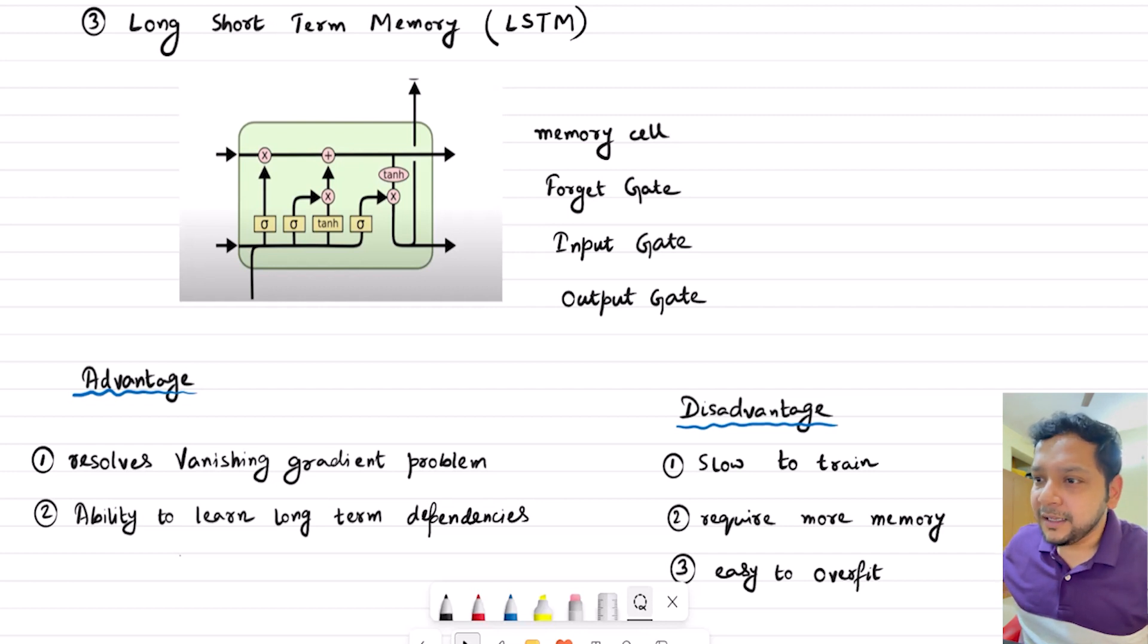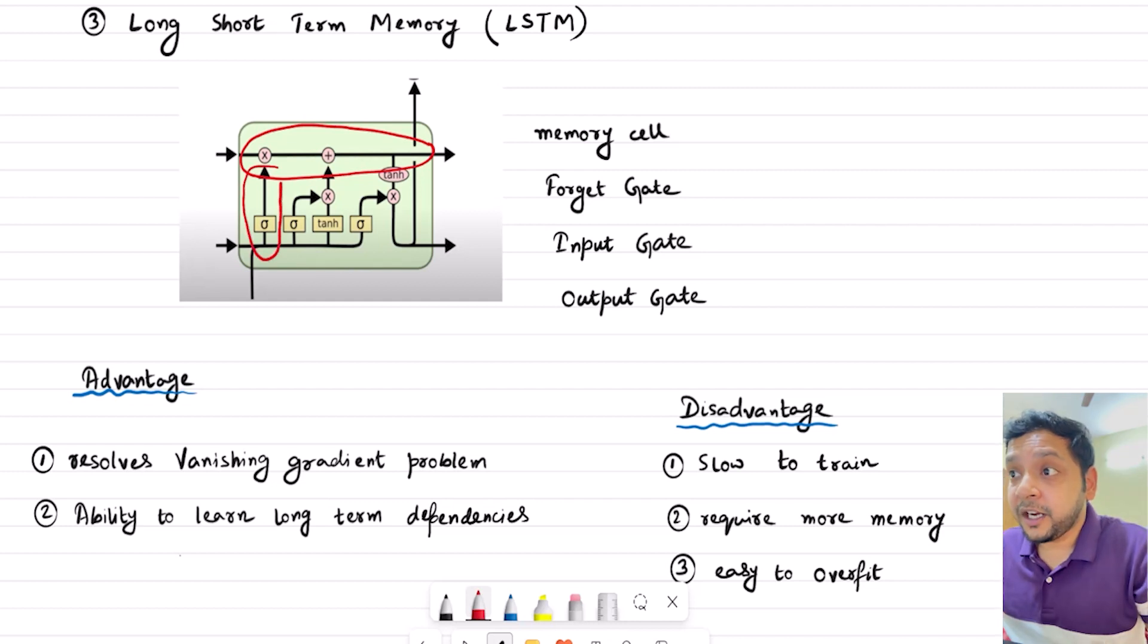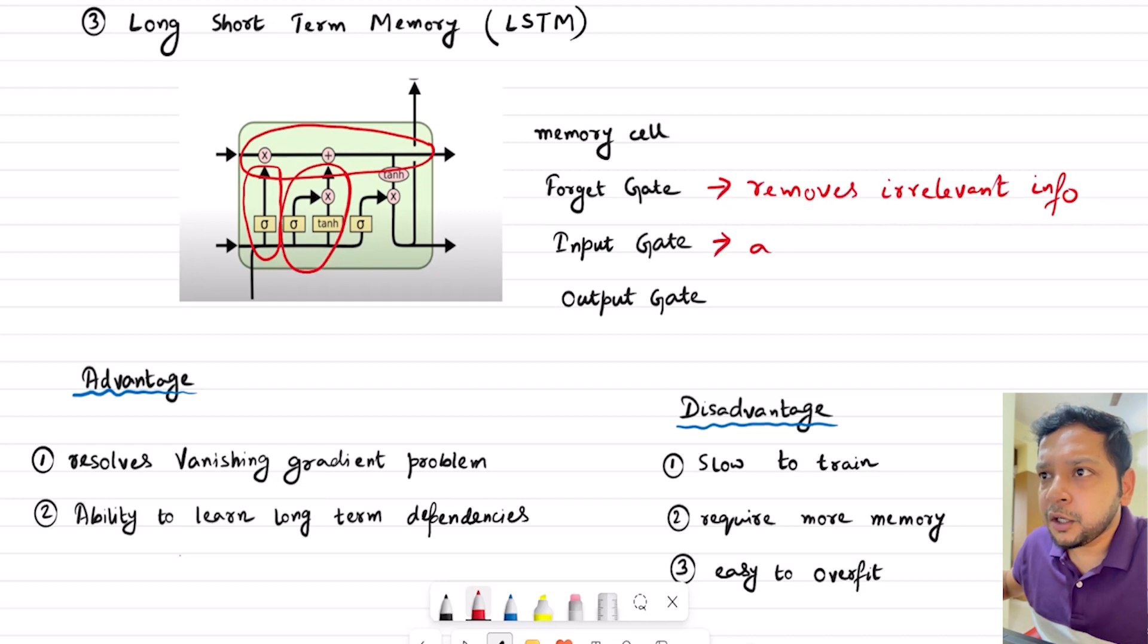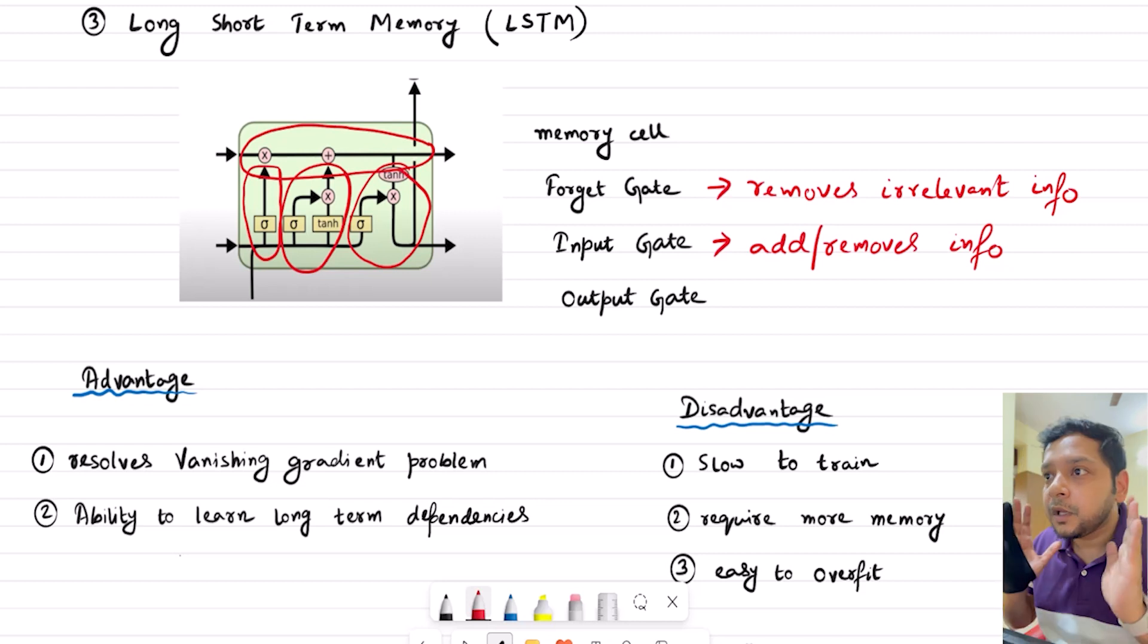In this diagram, this portion is the memory cell. This portion is the forget gate. What does the forget gate do? It removes irrelevant information. This one is the input gate, which adds or removes information. And this one is the output gate. Thus, with the help of the forget gate, it tries to remove the irrelevant information which it has seen over lots of sentences or the paragraph.